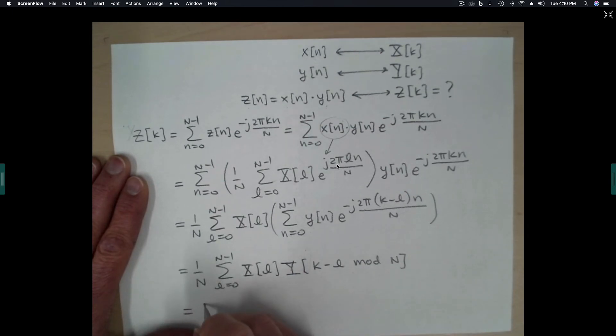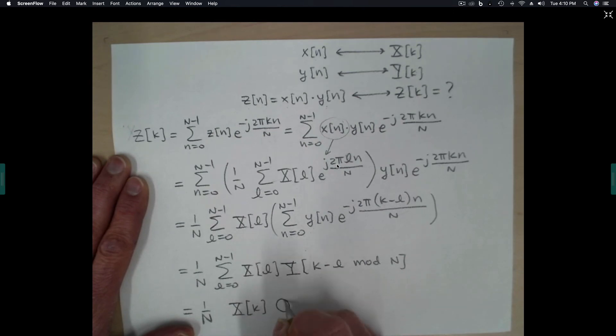So formally, we can write that is 1 over n times x(k) circular convolution, n-point circular convolution with y(k).